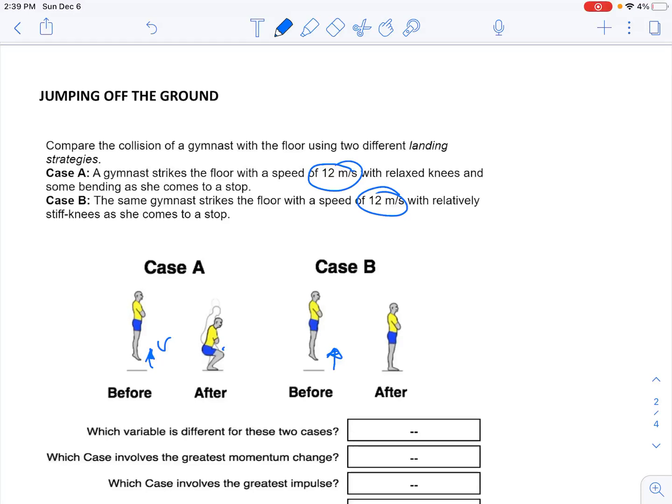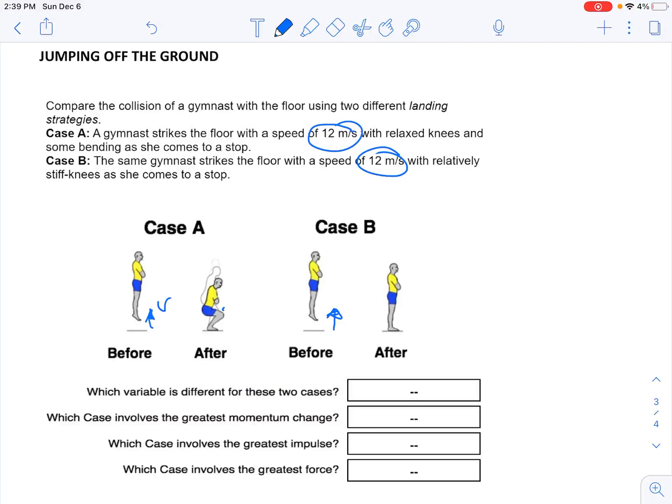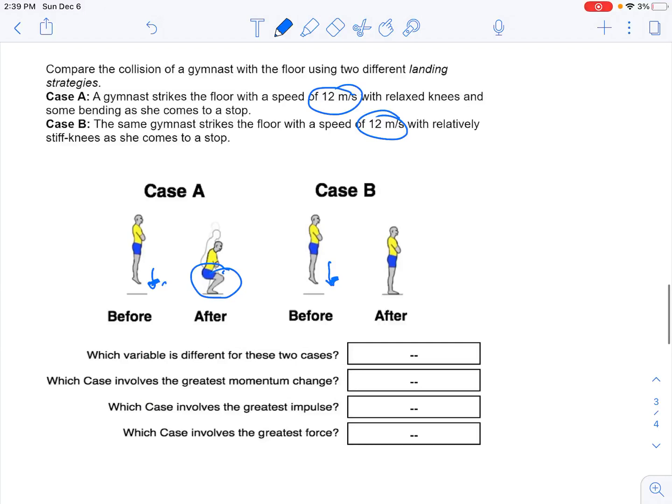Now with your knees bent versus straight, he's coming down with the same speed in both cases, but absorbing your landing by bending your knees is going to be a much better move than just keeping your knees straight. So which variable is different? In this case, time. Because you take a longer time in case A than you would do in case B to come to rest.